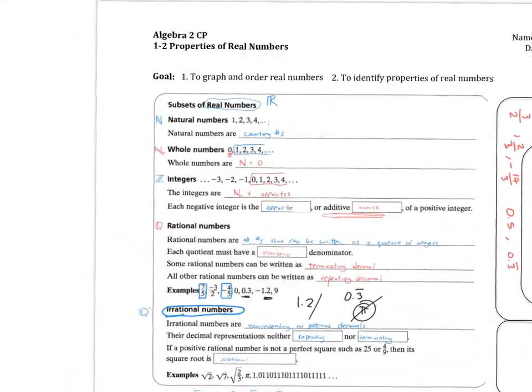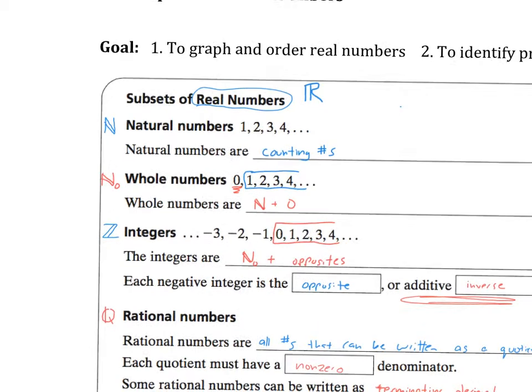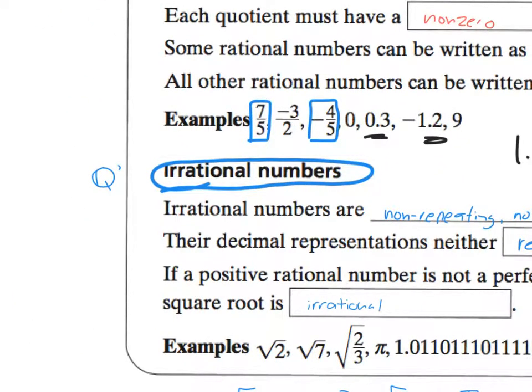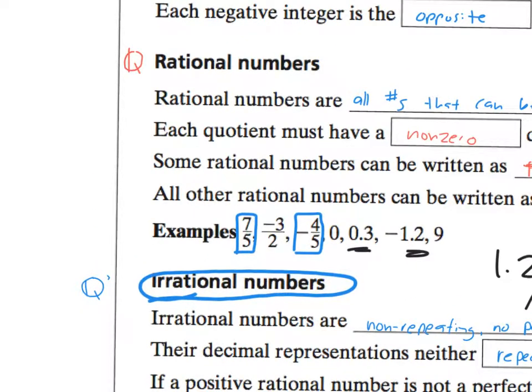So our subsets of the real numbers are my natural numbers, my whole numbers, my integers, my rational numbers, and over on the side, my irrational numbers. And again, these two are called mutually exclusive. They do not overlap. No overlap at all between rational and irrational numbers.